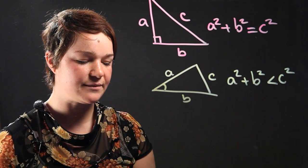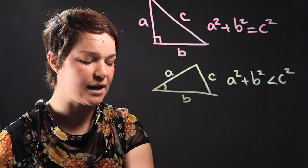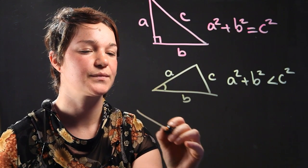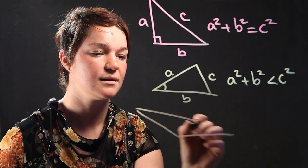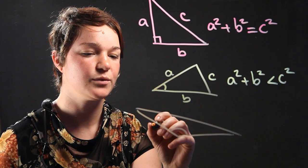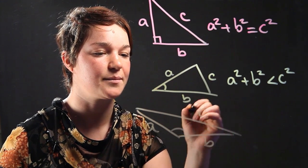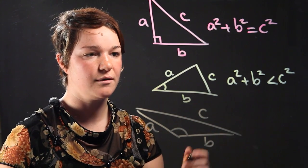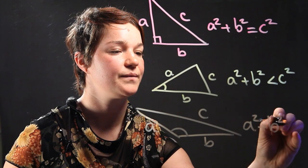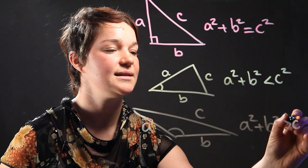And if we take it one step further, and we create an obtuse angle, or an angle larger than 90 degrees, here we have it. We have our obtuse angle right here. And once again, we're going to name the sides the same, A, B, and C. If we have an obtuse triangle, then A squared plus B squared has to be greater than C squared.